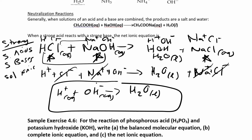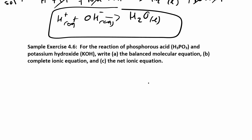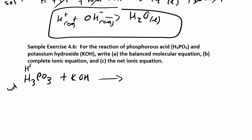That net ionic equation is the same whenever you have a strong acid and a strong base. Now let's try a weak acid with a strong base and write the molecular, complete ionic, and net ionic equations. Phosphorous acid, H3PO3, is a weak acid — how do you know? Because it's not one of the seven strong acids. We have H3PO3 reacting with KOH. The ions it would dissociate into are H+ and PO3 3−, but it doesn't dissociate completely.